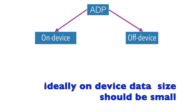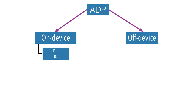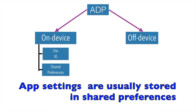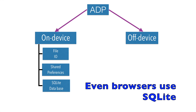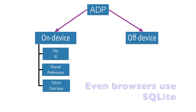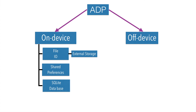In Android on-device storage, there can be multiple kinds of data you can typically deal with. The starting point is file IO operations — reading from a file and writing to a file. There is also shared preferences, which are specific to Android and used to save user preferences. Then there is SQLite database, and you can also do file IO on external storage.